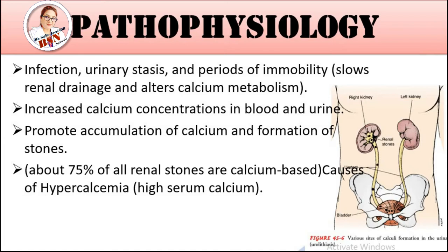Is ki wajah se infection ho sakti hai — kyunke wo hissa jahan pe stone thahar gaya hai ya stone bana hai, wahan pe lesions ho gayi hain ya injury ho gayi hai, to infection honi shuru ho jayegi. Infection ki wajah se bhi stone banna shuru ho jaate hain. Urinary status slow ho jata hai — renal drainage is totally altered due to calcium metabolism, because calcium concentration is increased.